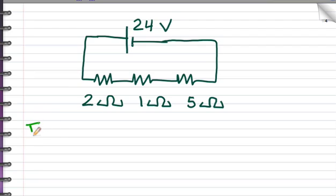Okay, first I'll find the current coming out of the battery, voltage 24 divided by the total resistance 2 plus 1 is 3 plus 5 is 8. So we get 3 amps of current.